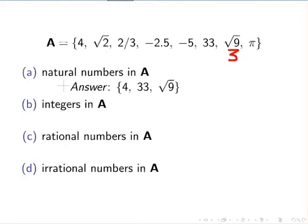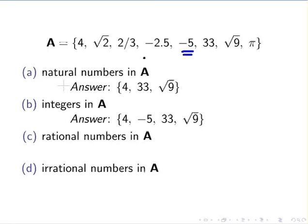Moving on to the integers in A. The additional value here is minus 5. Minus 5 is not a natural number, but it's still an integer. Recall that natural numbers are positive integers, while integers include all positive and negative values. So we include minus 5 as well.